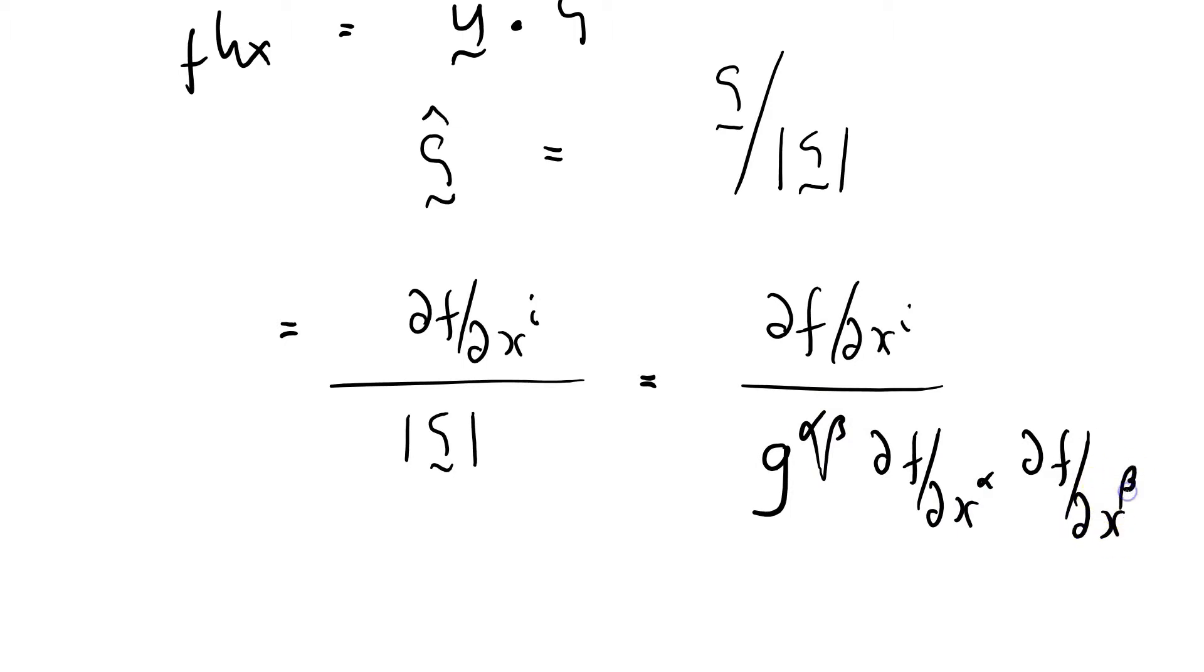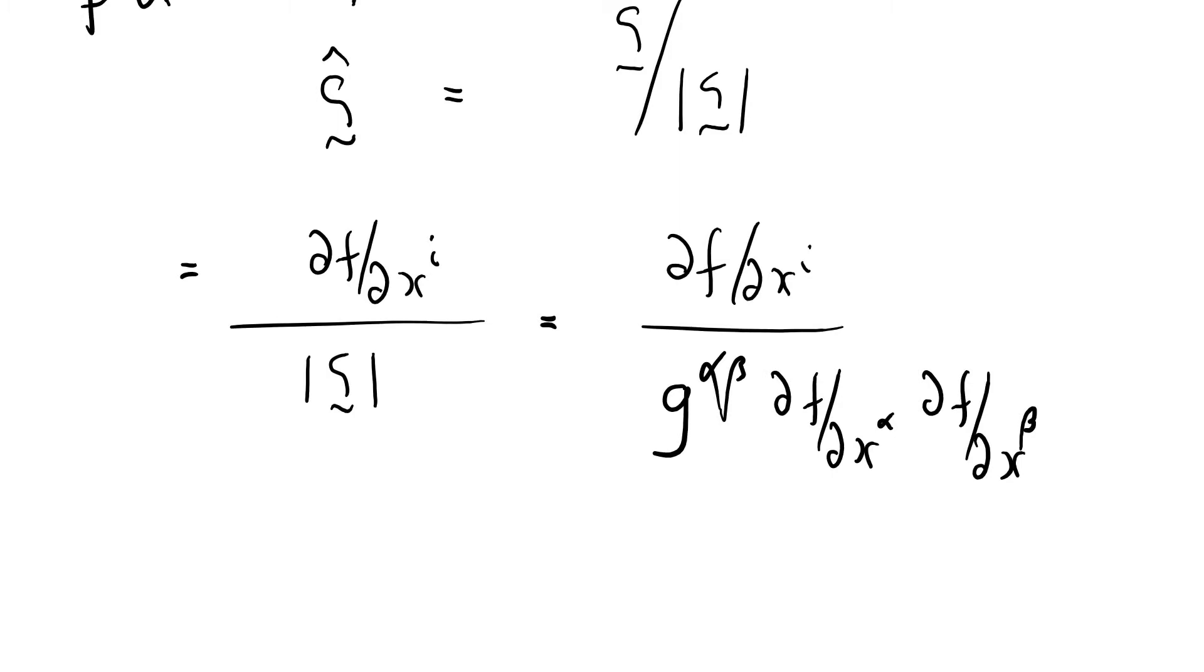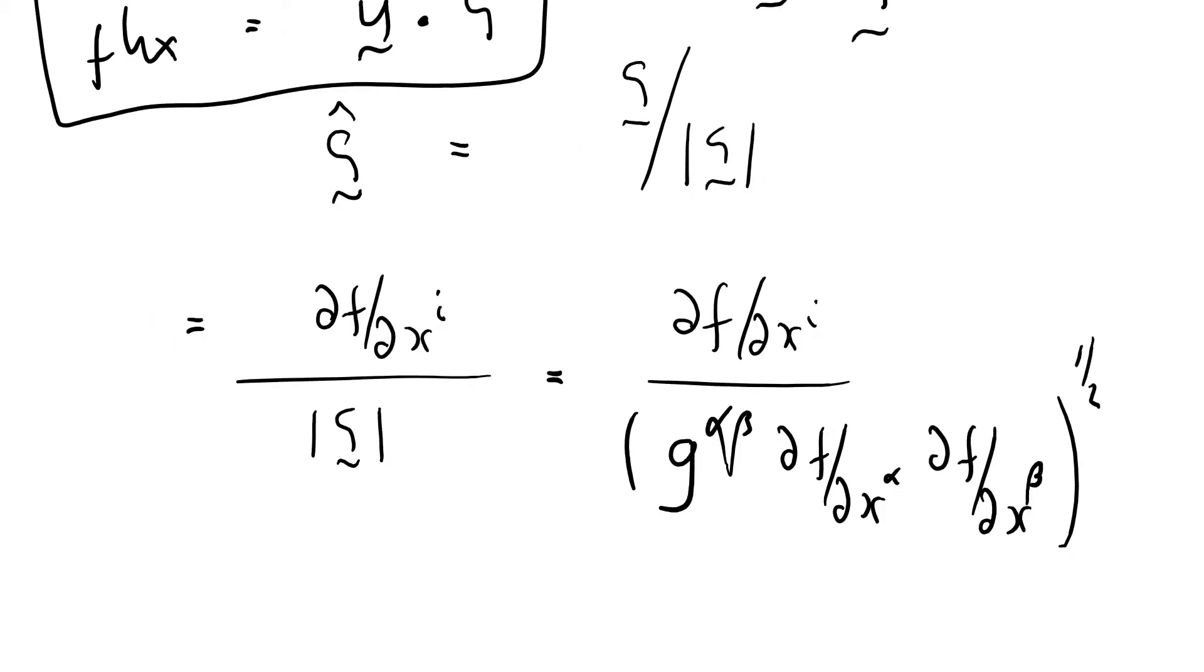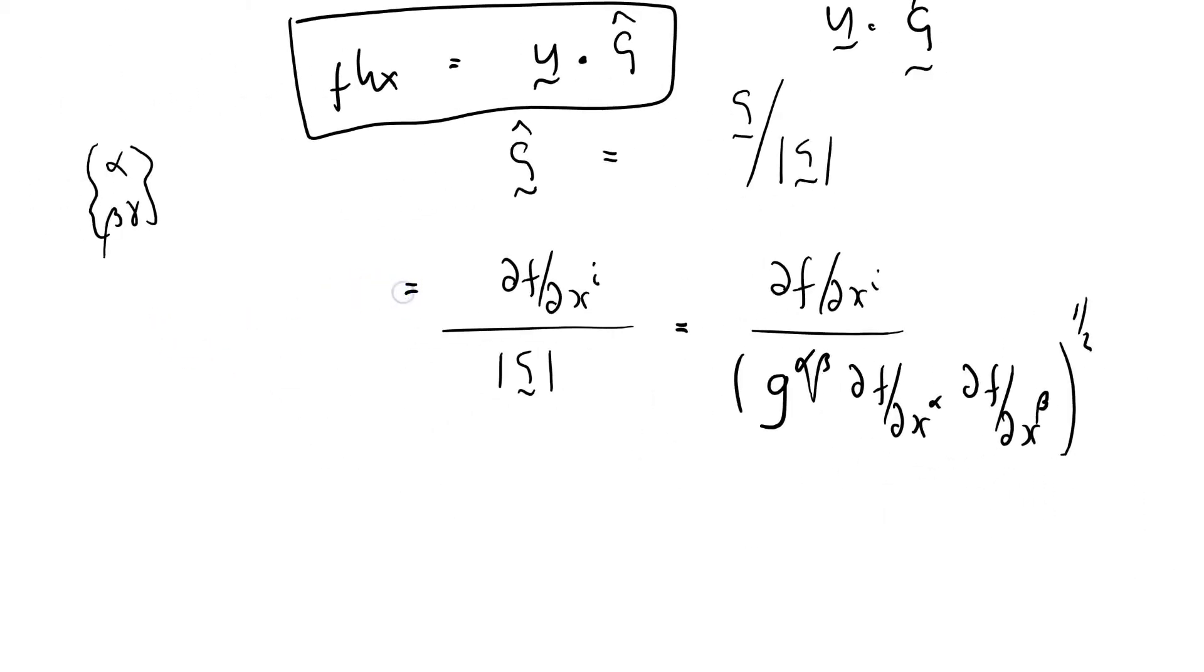Over the modulus of the gradient, it's just g^(αβ) ∂f/∂x^α ∂f/∂x^β. We've got an α, we've got a β. Because that is, by definition, the modulus of... oh actually, it's to the power half. And that works nicely. So we've got this beautiful system here, that the flux is just u dot ĝ, the gradient hat, where g is the gradient and the hat tells me that it's a unit vector. So that's quite a nice way to say it.